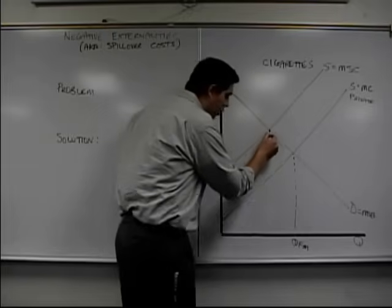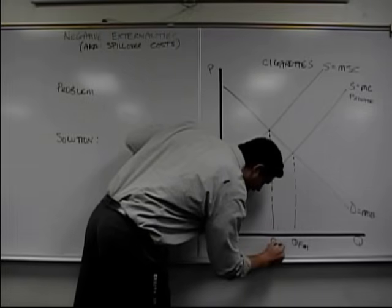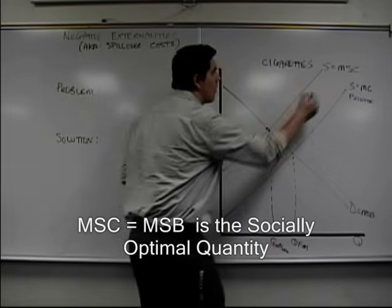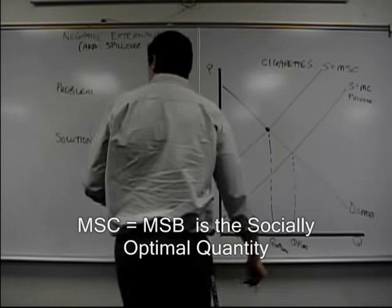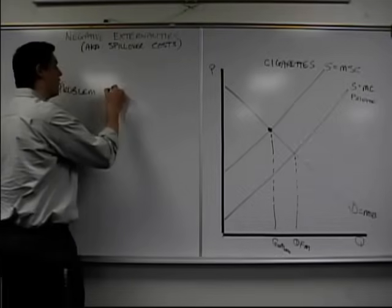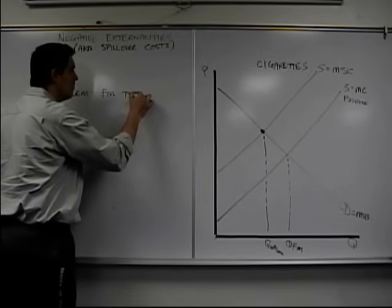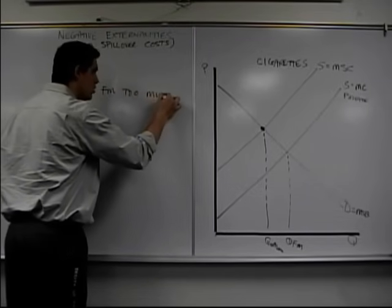If you look, it gives you a quantity. That quantity is the quantity that is optimal. This is where marginal social cost equals marginal social benefit, what output should be produced. So the problem we said in the free market, too much is produced. Too much output.